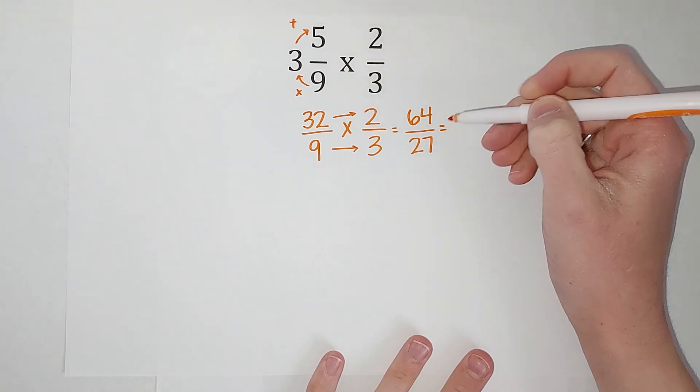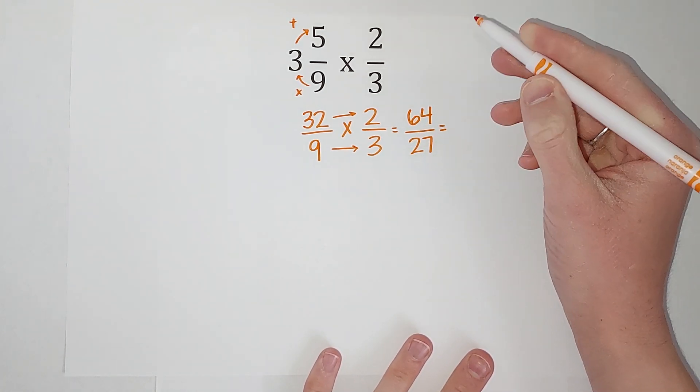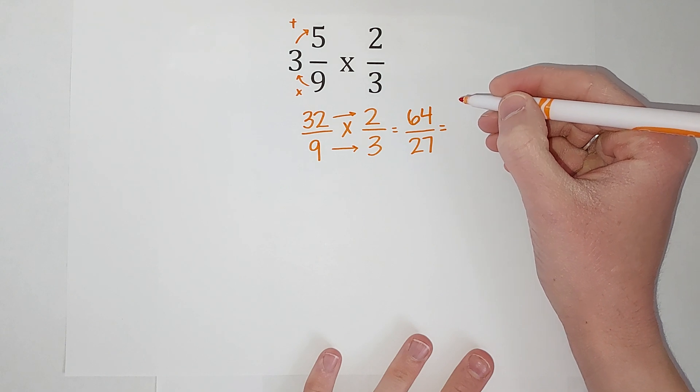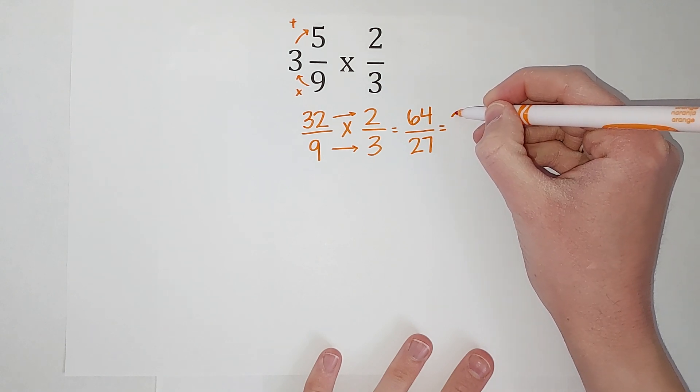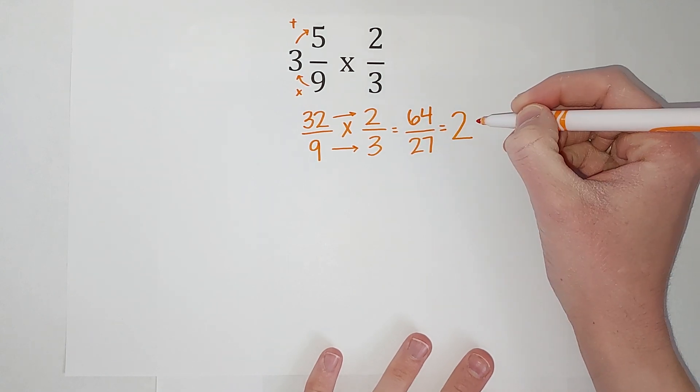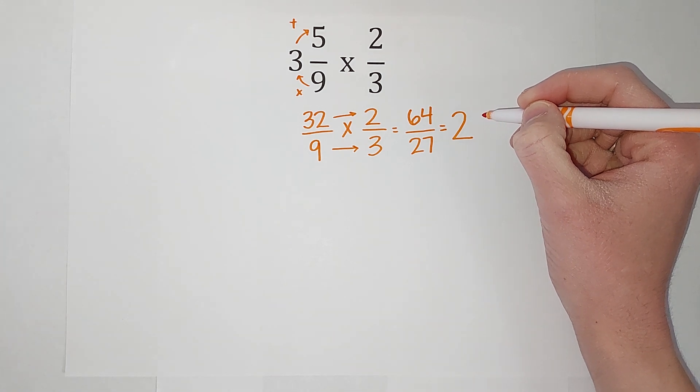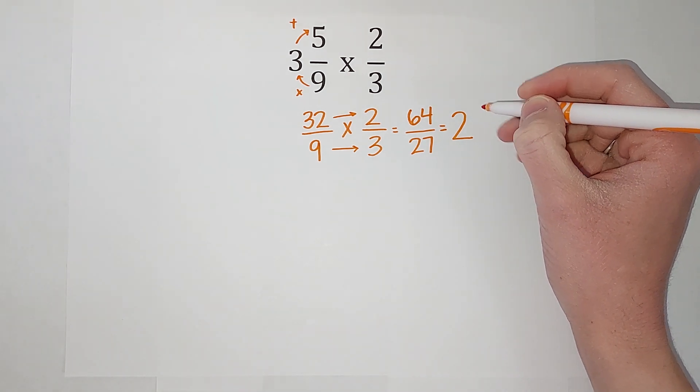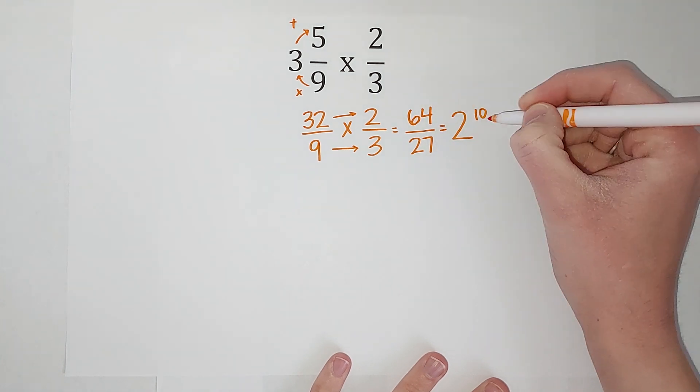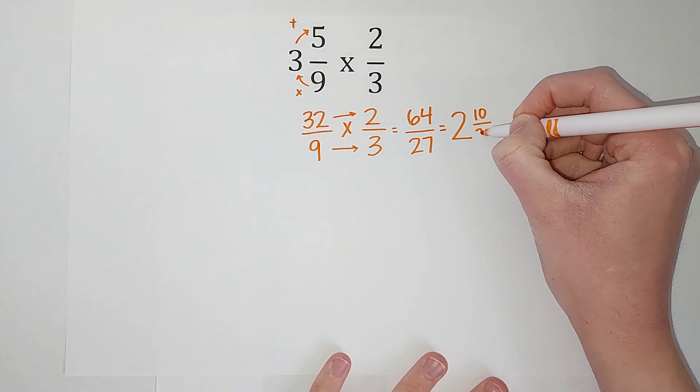So to turn it back into a mixed number, I ask myself, how many times does 27 go into 64? Well, it goes twice. 27 times 2 gives me 54, so I have 10 left over to get to that 64, and my denominator is still 27.